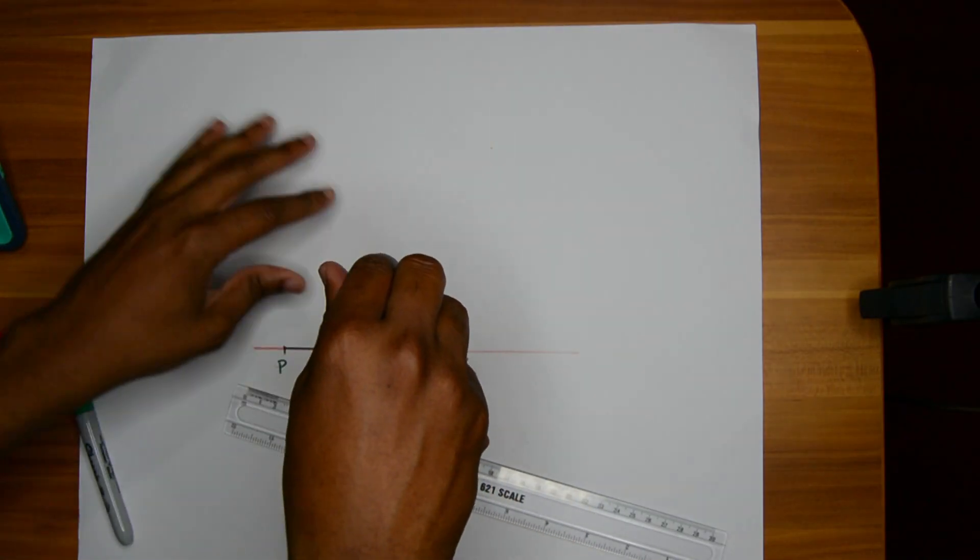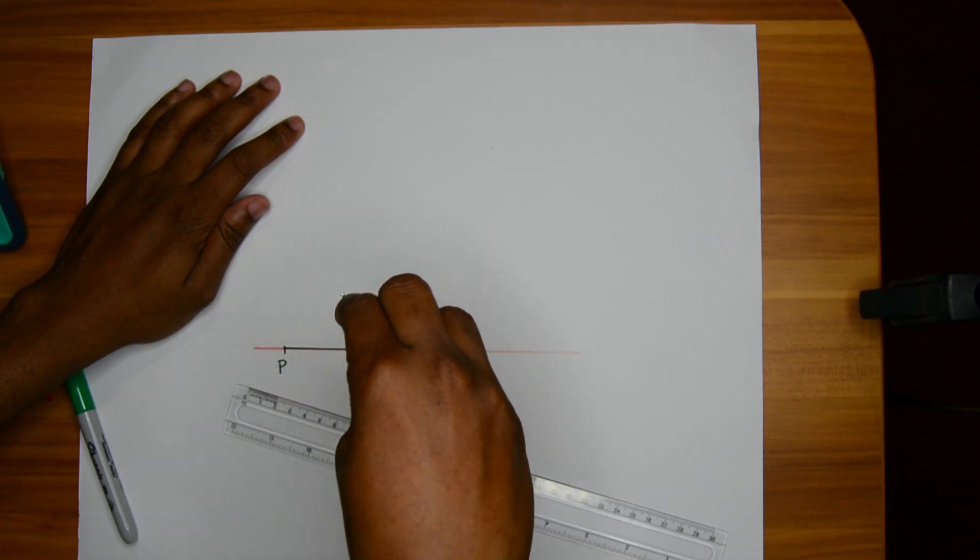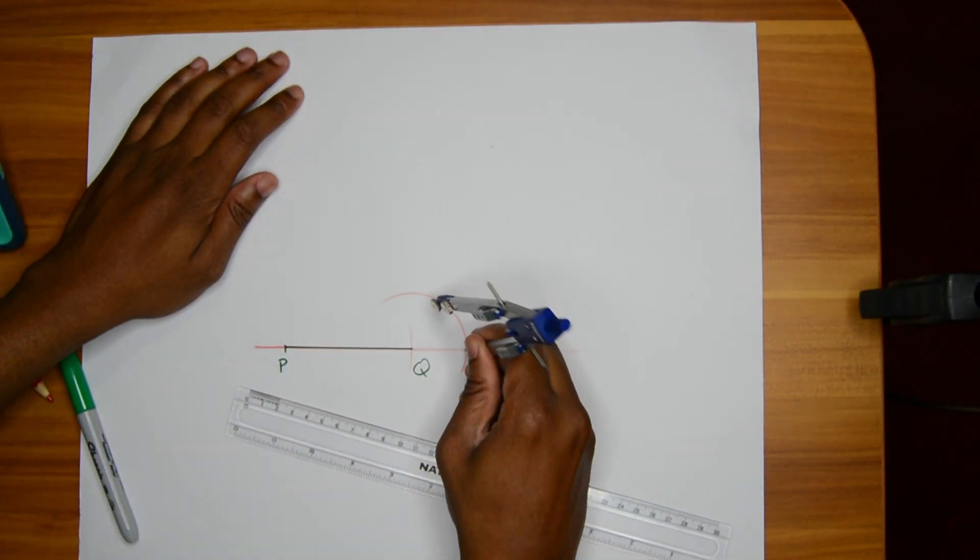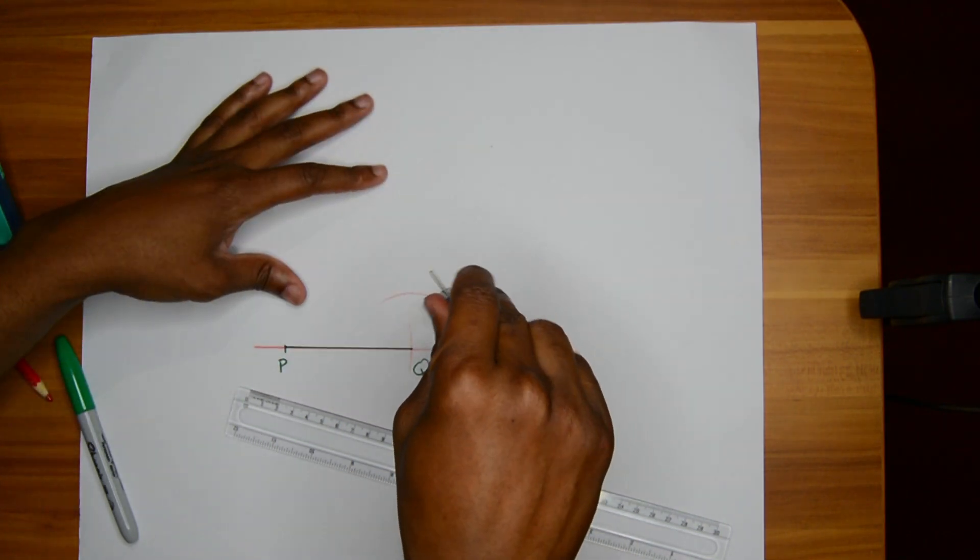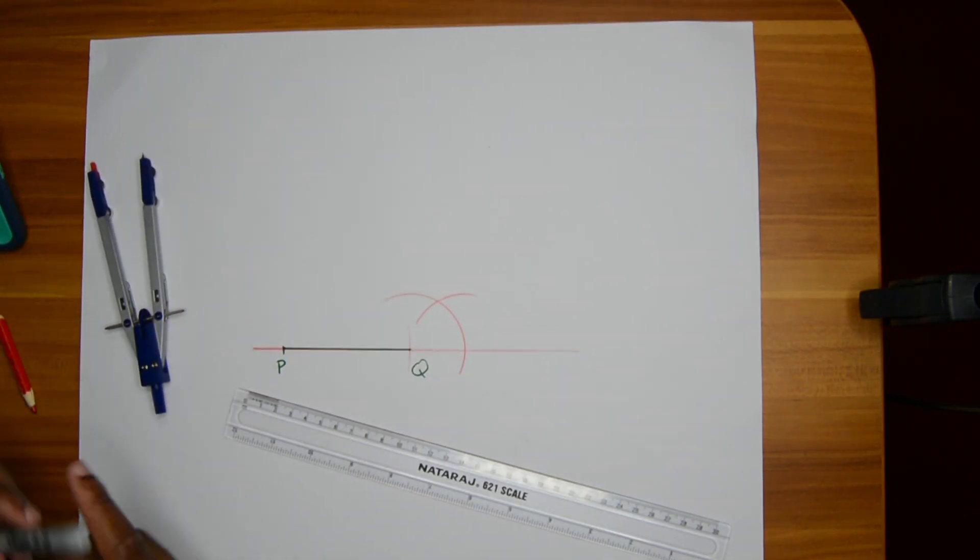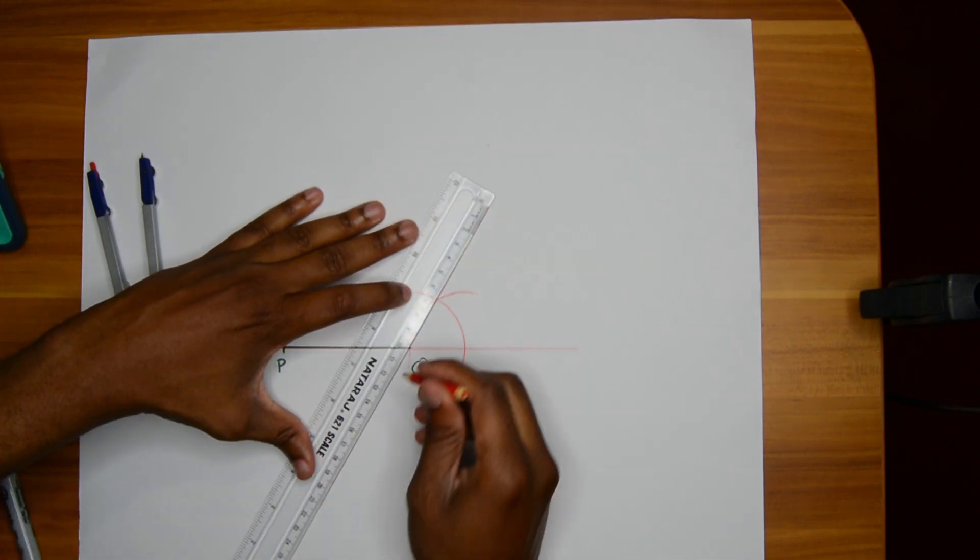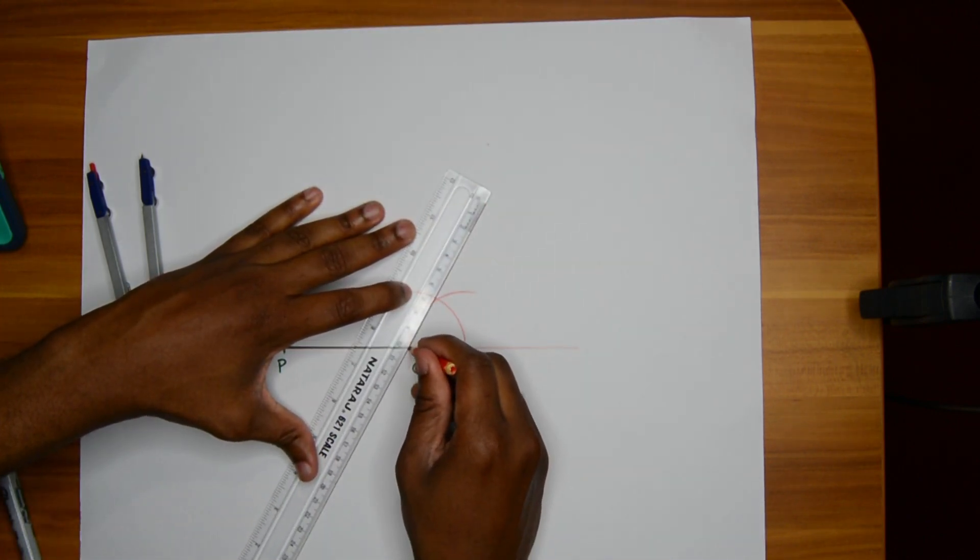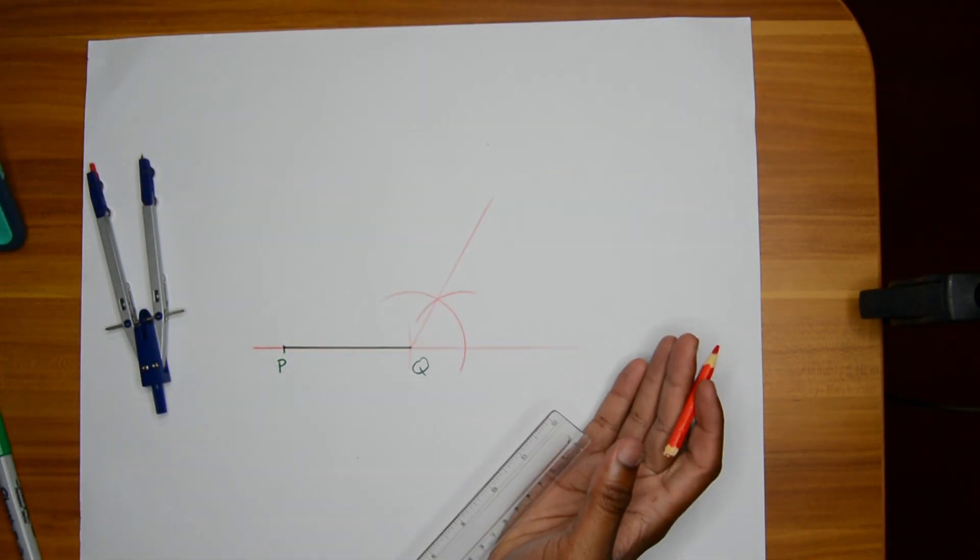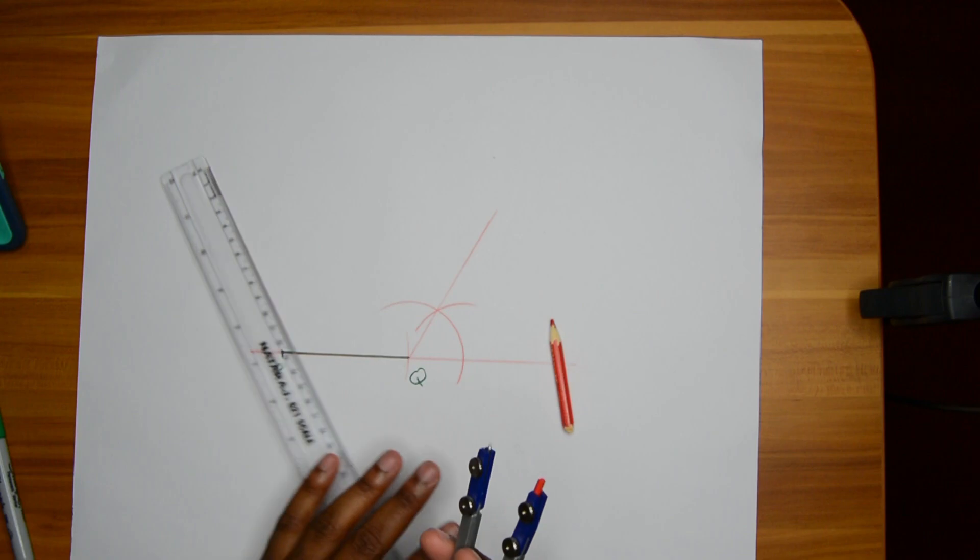That's going to be my first arc. Then I'm going to come here and put down another arc on them. Now I come with my light pencil - the red here represents a light pencil or your construction lines - and I do like that.